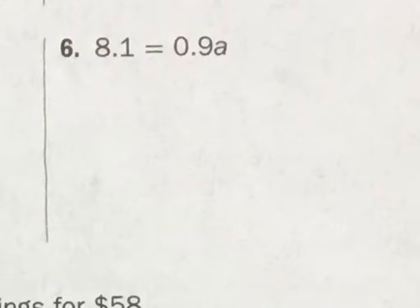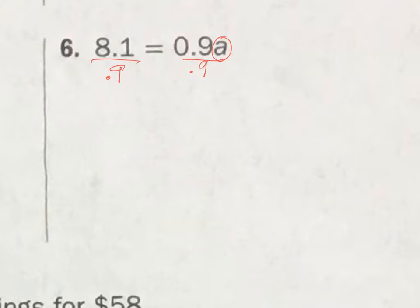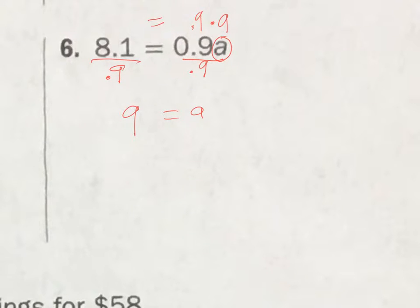Number 6. Here is my variable; I want to get that all by itself. It's 0.9 times a, so I'm going to do 0.9 divided by 0.9, and then come over here and divide this by 0.9 as well. This leaves me with just a equals 9. Because if I put 9 here times 0.9, that gets me 8.1. I solved the equation. a equals 9.